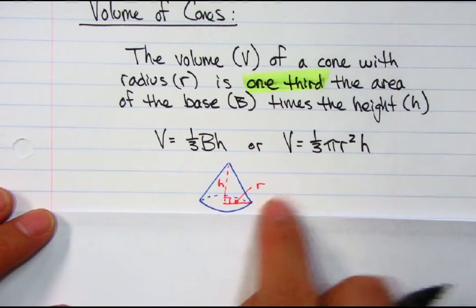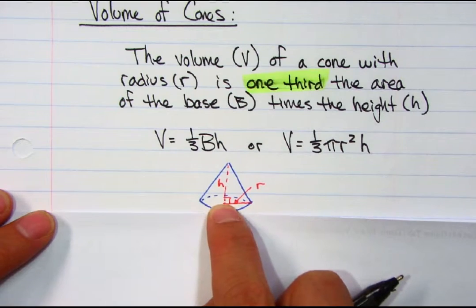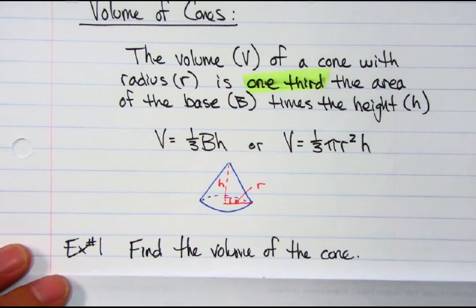Remember, radius is the radius of the base. The height is from the center of the circle straight up to the top of the cone.